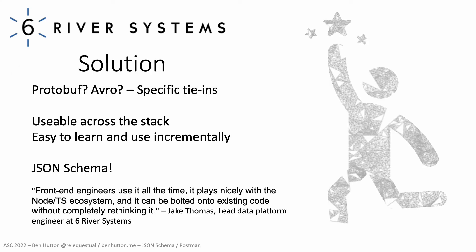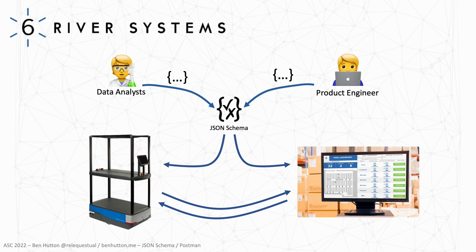They considered popular data definition formats such as Protobuf and Avro, but found these had specific tie-ins that left them inflexible. The solution needed to be interoperable across multiple programming languages — being easy to learn and use incrementally would be a great convincer too. Of course, JSON Schema. Jake explained that JSON Schema can be added minimally to existing systems without a problem. Different domain experts could collaborate, finding it easier to learn and understand as a neutral and interoperable format. The schemas are built and used by both the robots and the command and control centre, even though they use different programming languages — plus one point for interoperability and data validation.